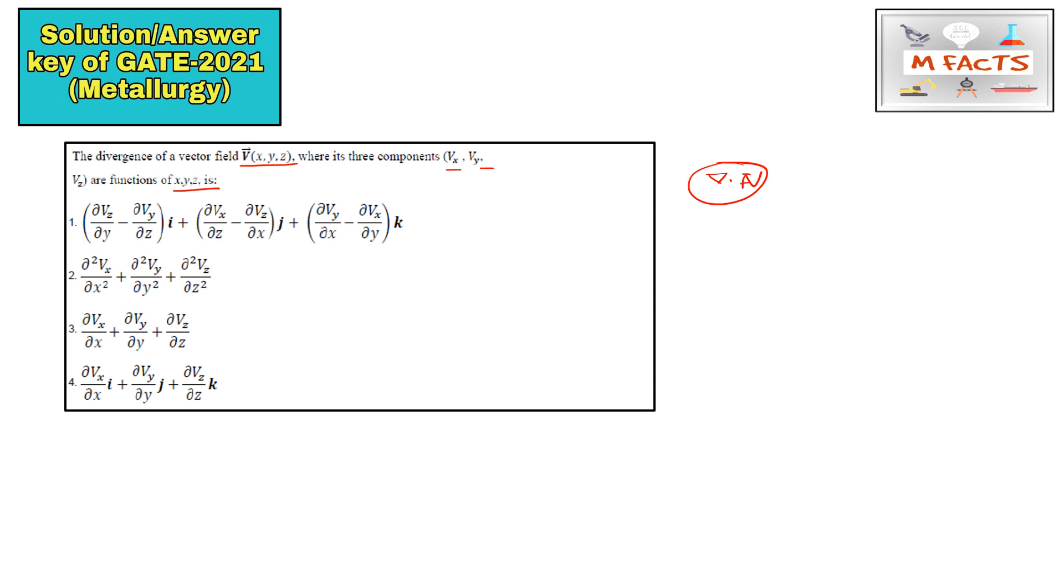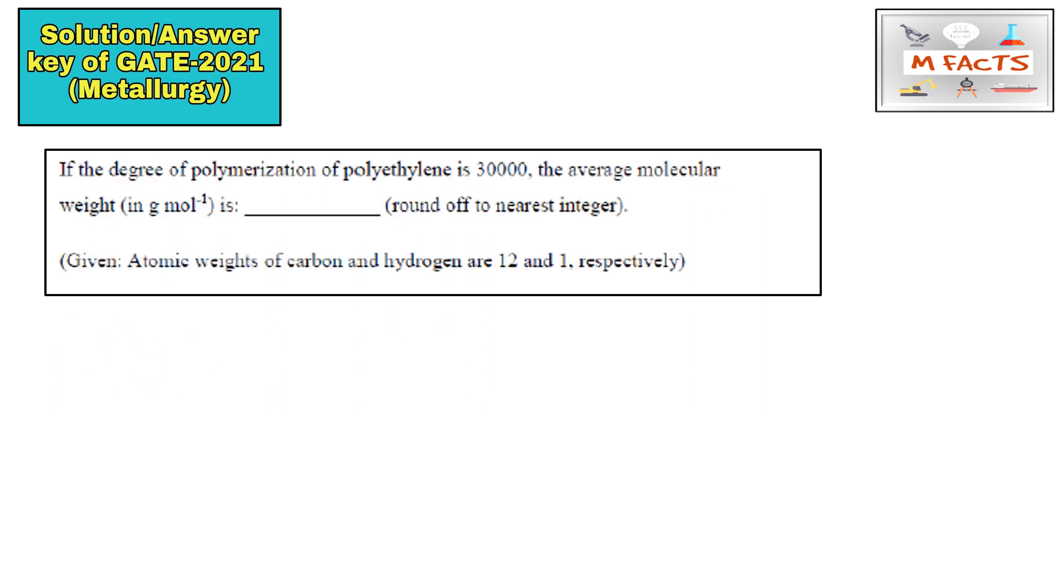If you will take the dot product of two vector quantities, it will not become the vector quantity. This is a direct question, so you can check the option three, that is C option is correct here. So the C part is correct.